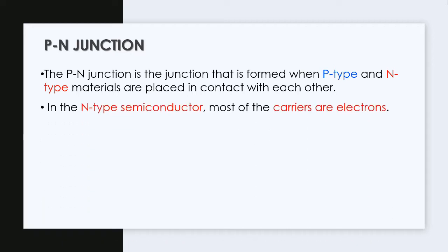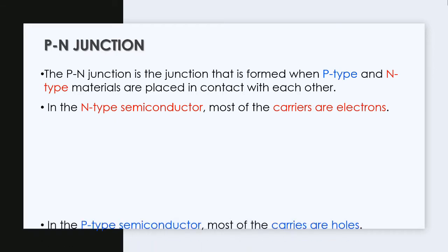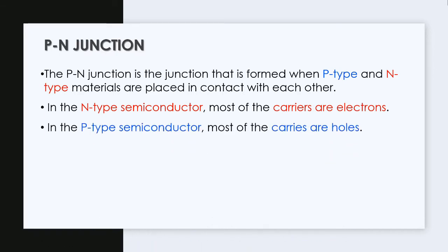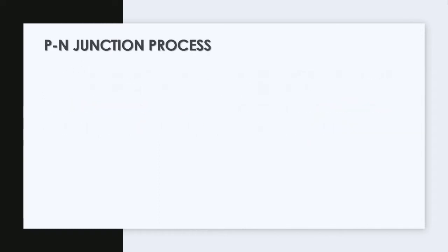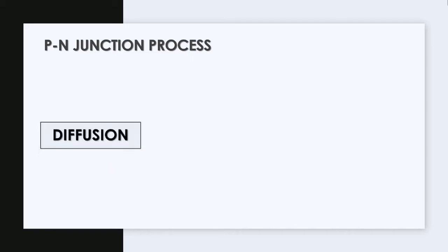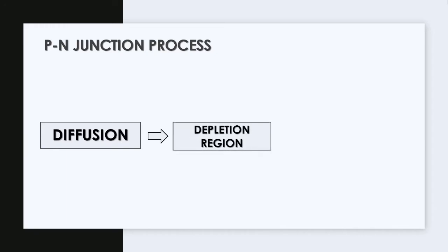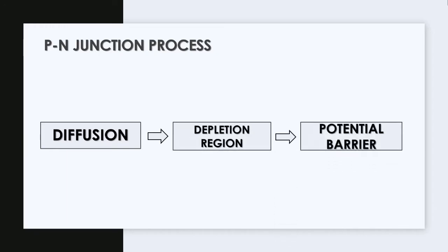In the N-type semiconductor, most of the carriers are electrons. In the P-type semiconductor, most of the carriers are holes. There are three processes in a PN junction: the first one is diffusion, the second one is a depletion region, and the third one is a potential barrier.